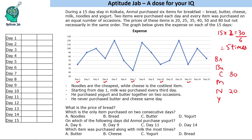On days 1, 4, 7, 10, and 13 we have milk purchased. Now let us look at the extreme values. The maximum value on the graph is 120, which is possible only with 80 plus 40. So on those days showing 120, it must be 80 plus 40.